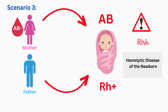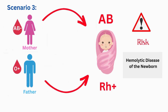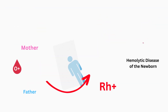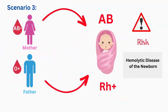Scenario three: the mother has an AB negative blood group and the father has an O positive blood group. If a child gets the blood group type from the mother, which is AB type, and the Rh factor from the father, which is Rh positive, then there is a high risk of hemolytic disease of the newborn.